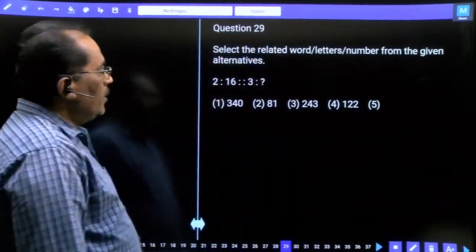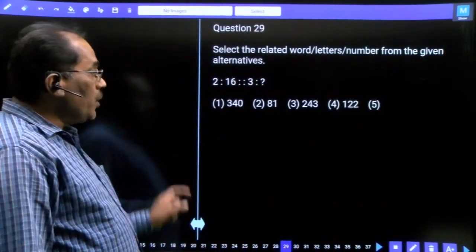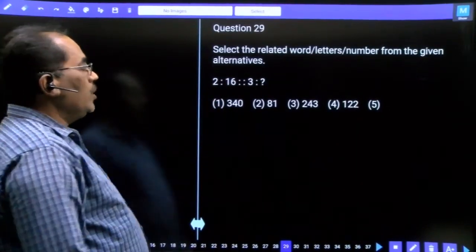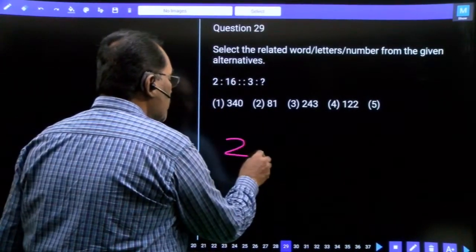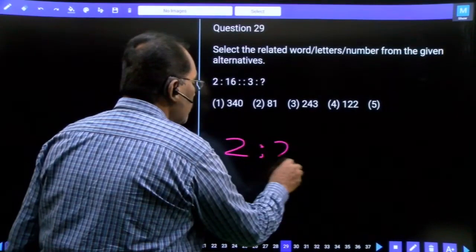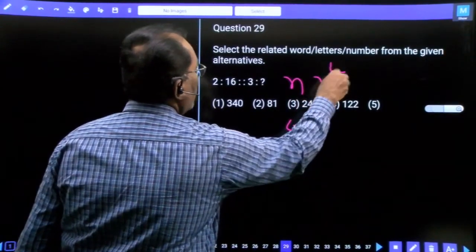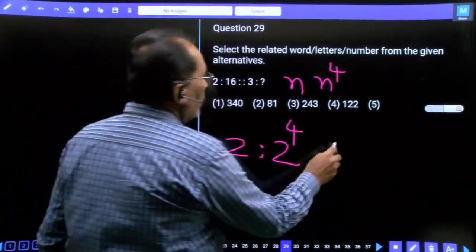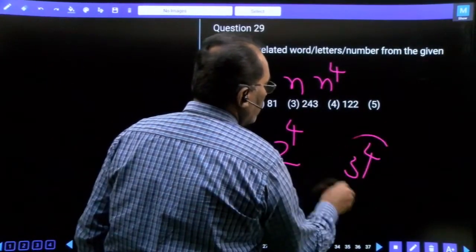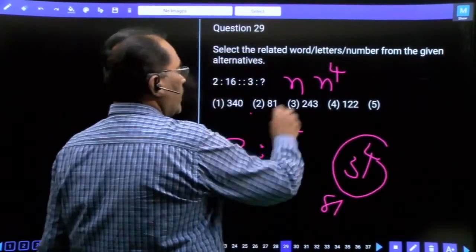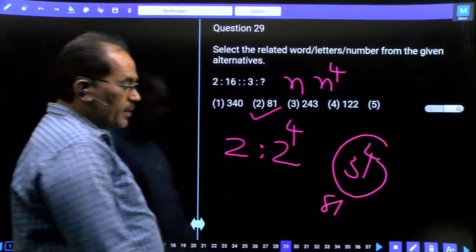Question 29, this is a number analogy. 2 is to 16, 3 is to question mark. 2 to 16 is 2 to the power 4, so n to the power 4. 3 power 4 equals 81, our answer. Second option, n power 4.